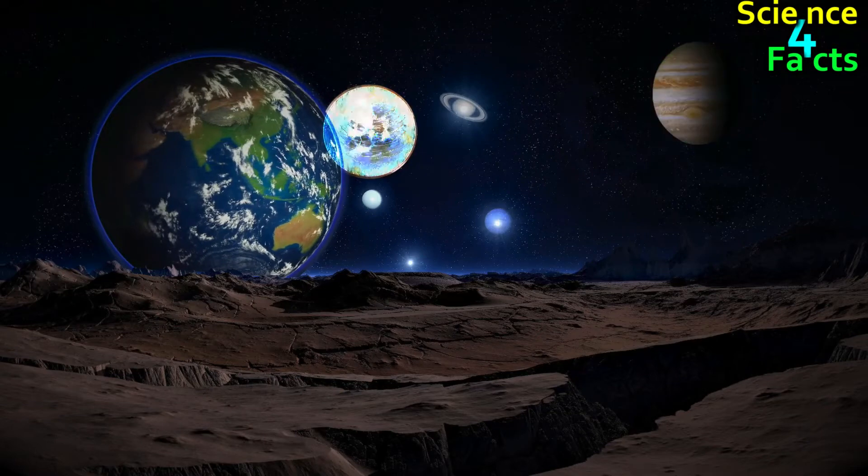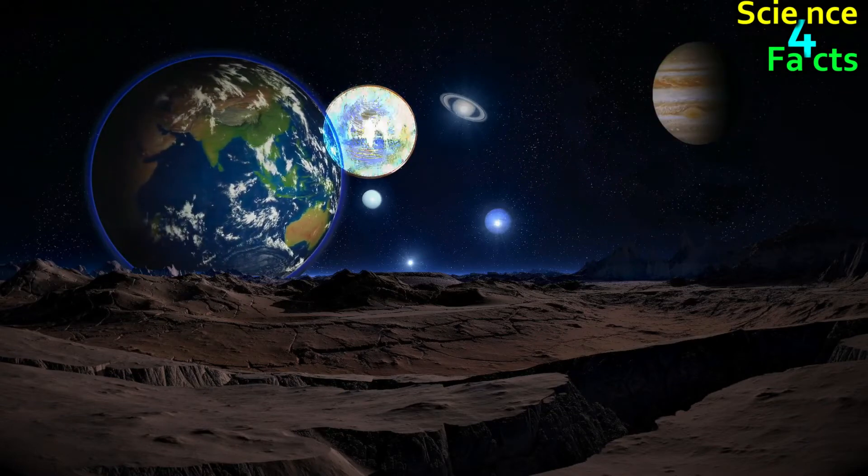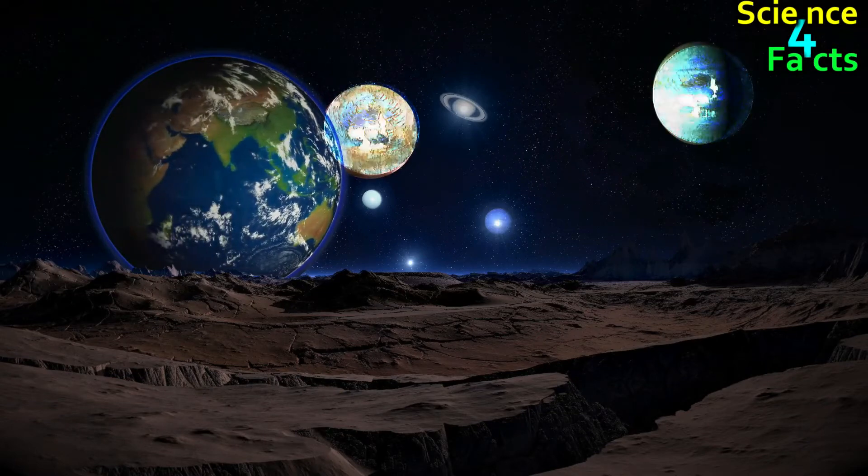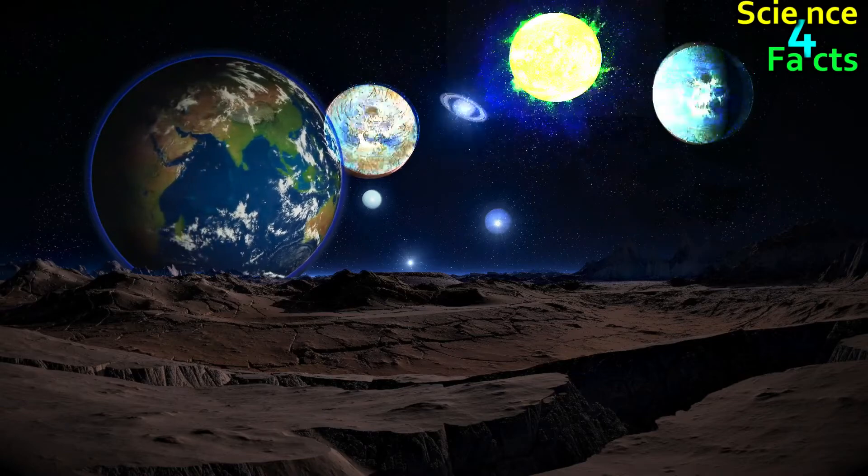Jupiter is a bright planet, and Mars sometimes gets bright too. But neither Jupiter nor Mars at its brightest can outshine Venus.